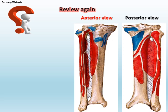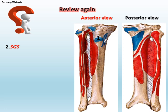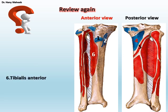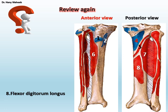To review again the muscles attached to the tibia: 1. Ligamentum patellae; 2. SGS — sartorius, gracilis, and semitendinosus; 3. Semimembranosus; 4. Popliteus; 5. Soleus; 6. Tibialis anterior; 7. Tibialis posterior; 8. Flexor digitorum longus; 9. Iliotibial tract.